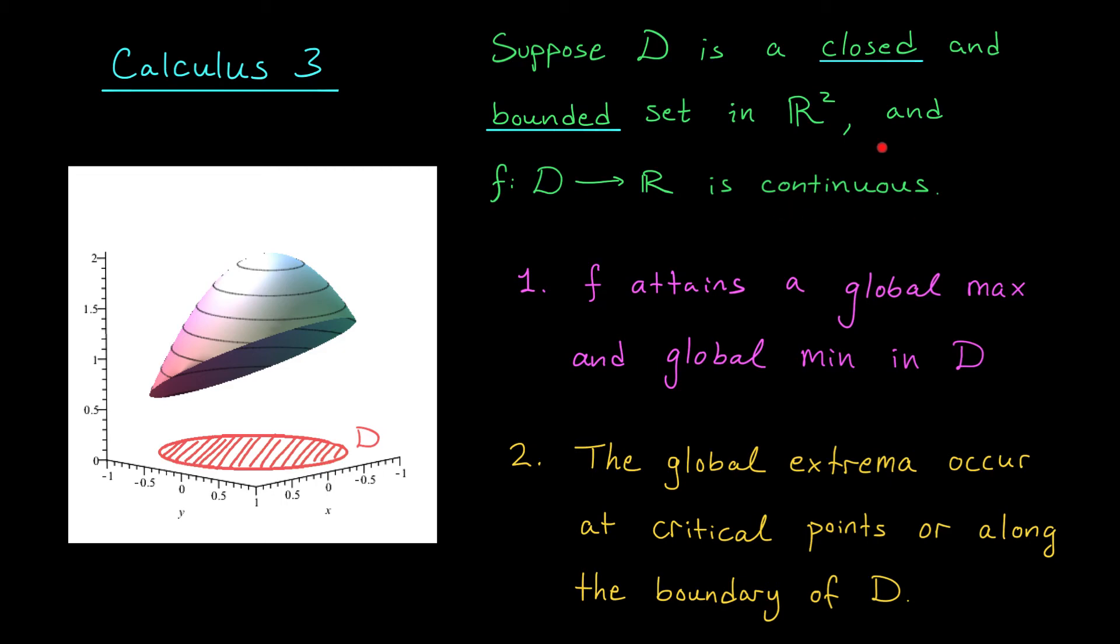if your function happens to be continuous over this entire closed and bounded region D, then we have a version of our extreme value theorem. It says that the function is guaranteed to have a global max and a global min somewhere in this region.